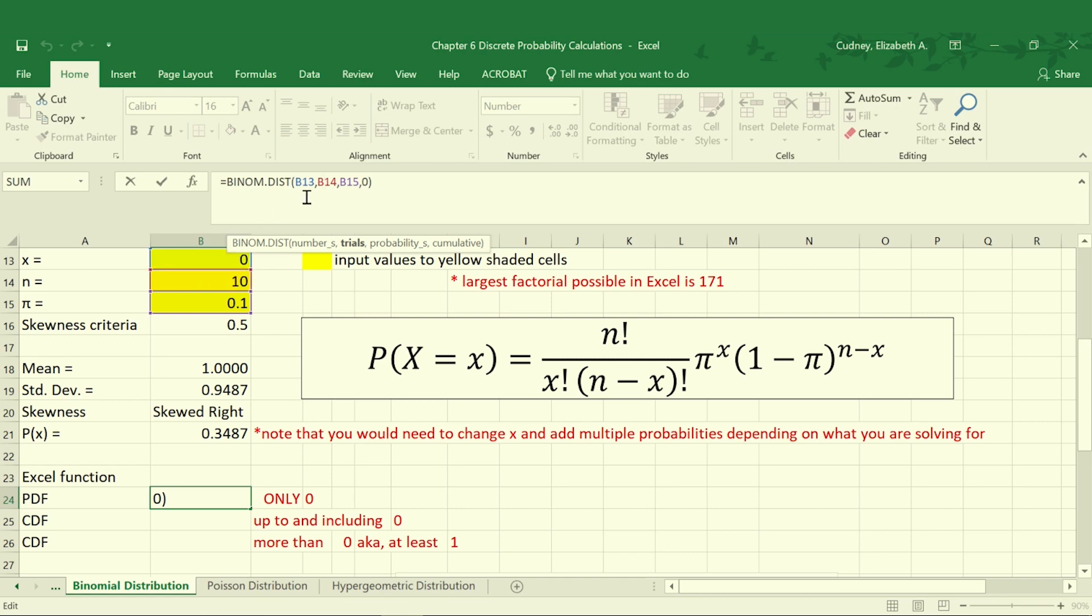The number of trials is our n which was b14. The probability, the probability which was our pi value which was 0.1, and then if we want this to be cumulative or not. Our pdf function if you recall is only for that specific number. So we're going to select false for that. We don't want the cumulative number.